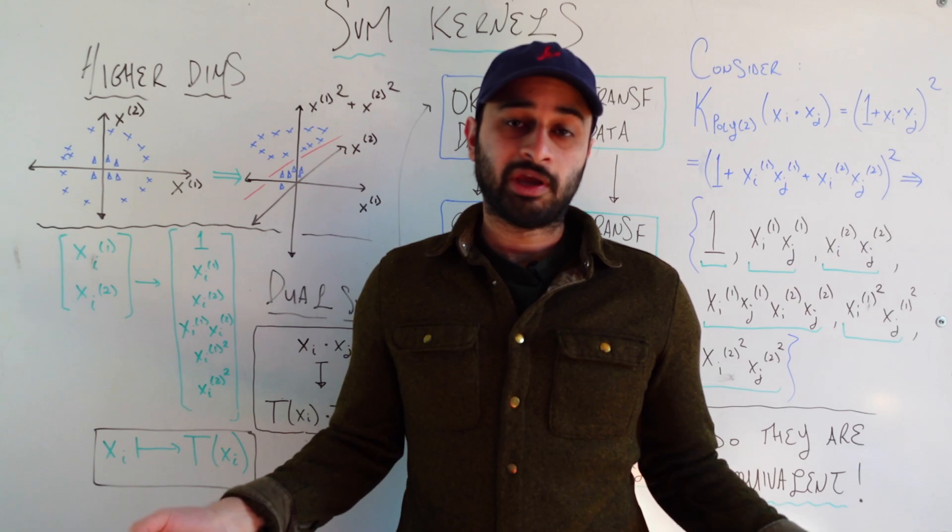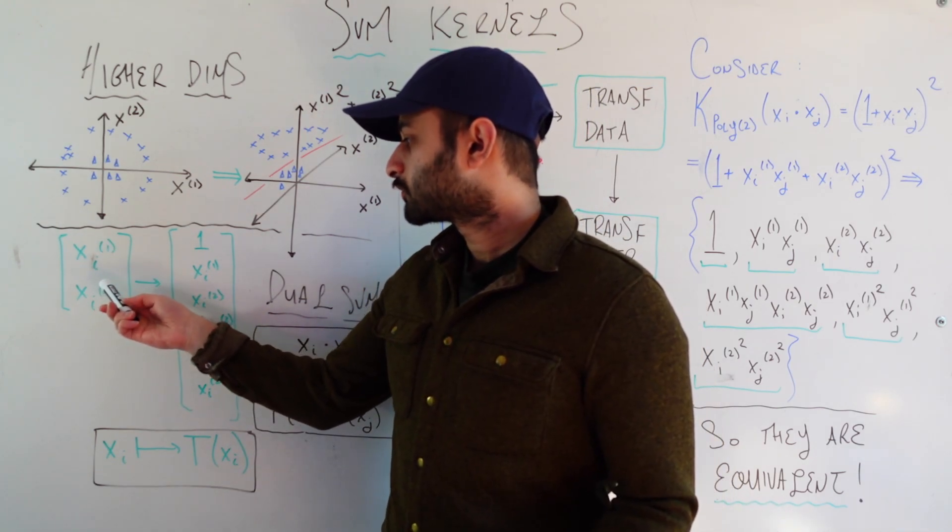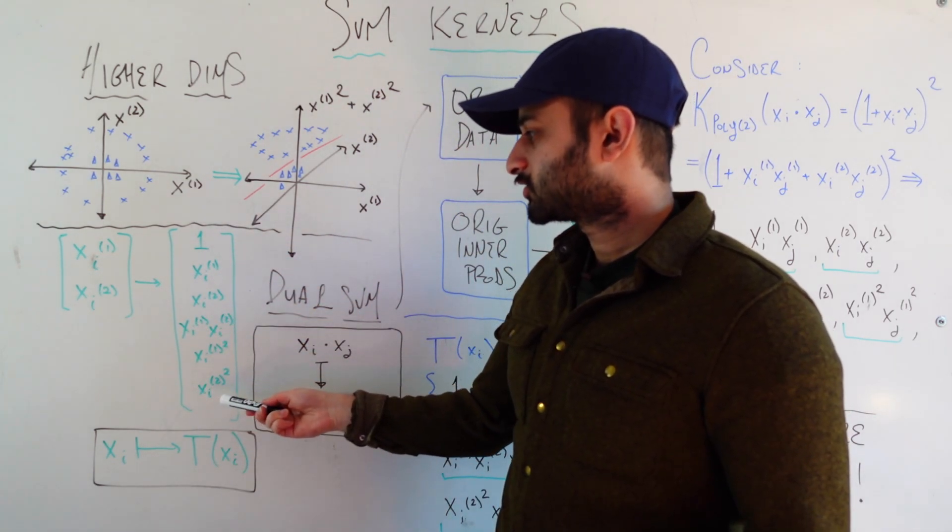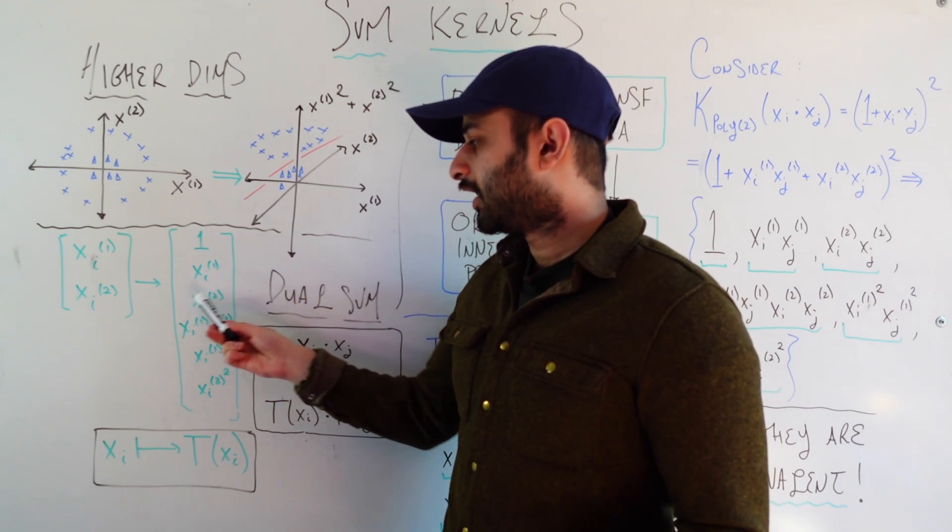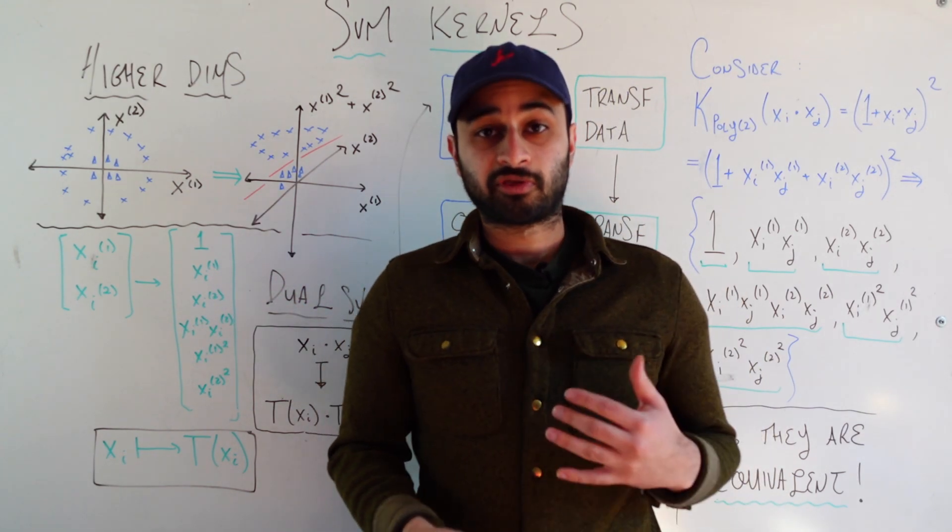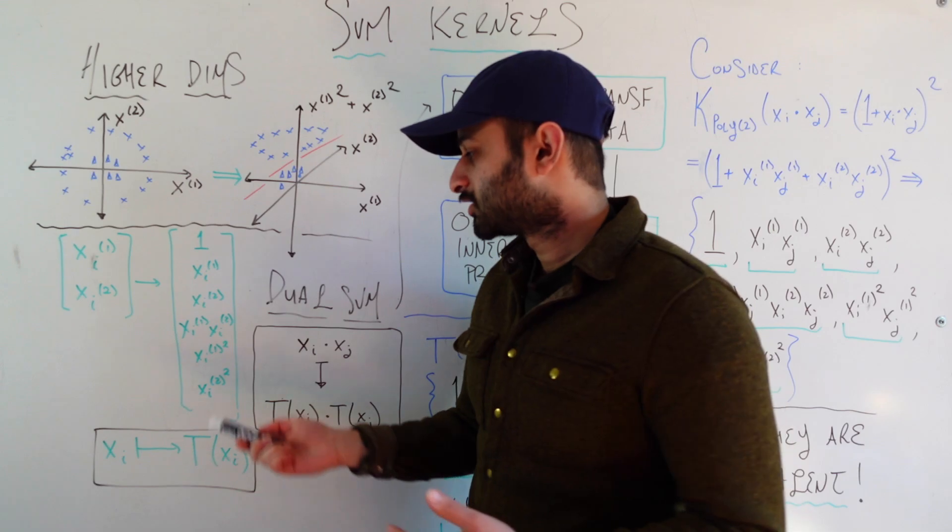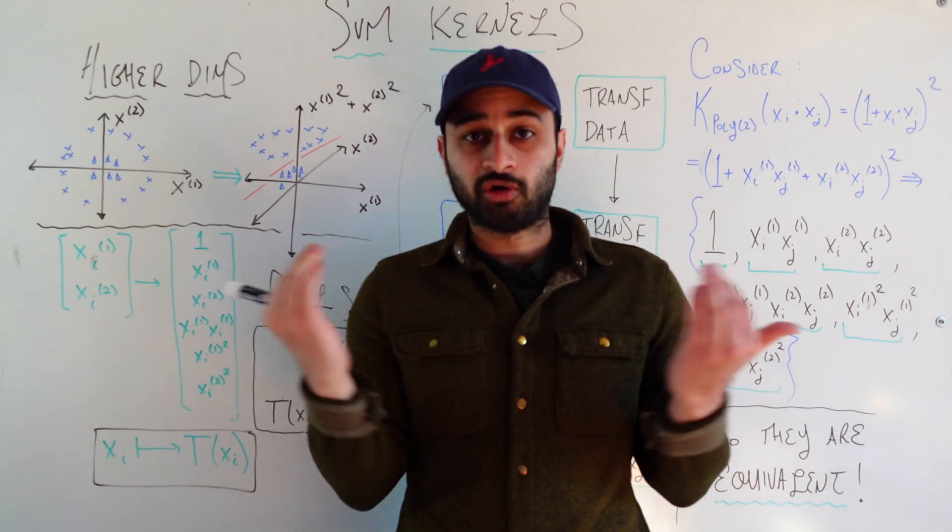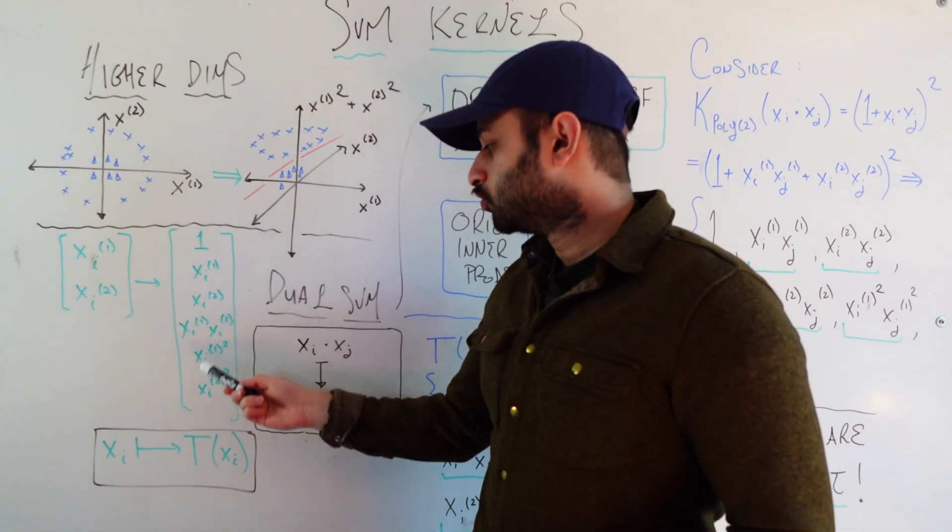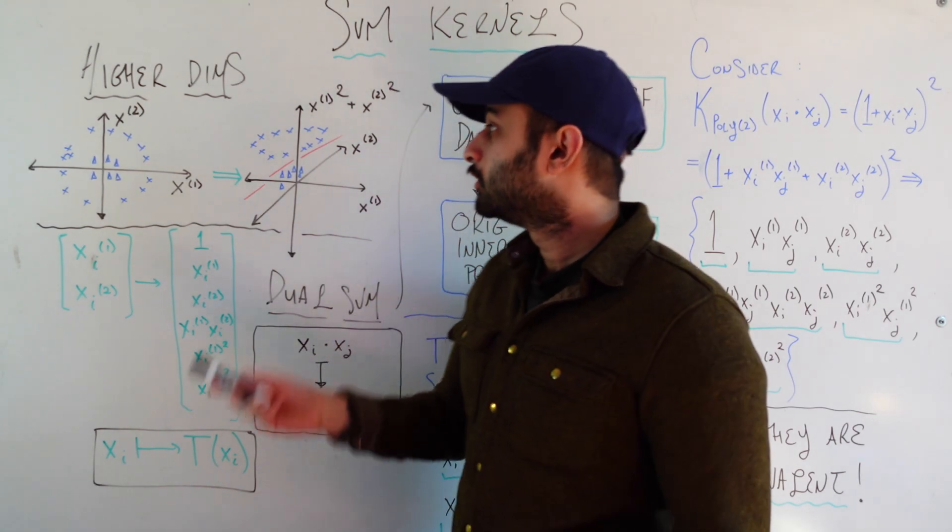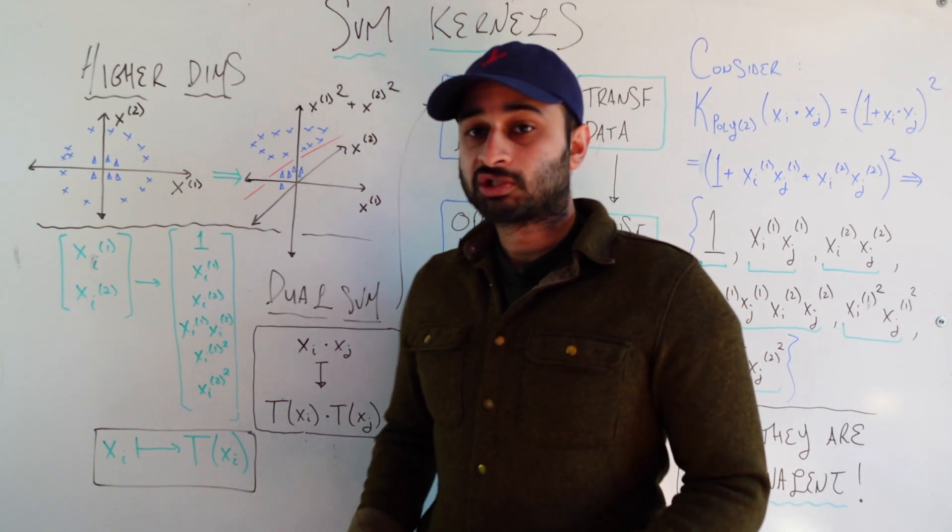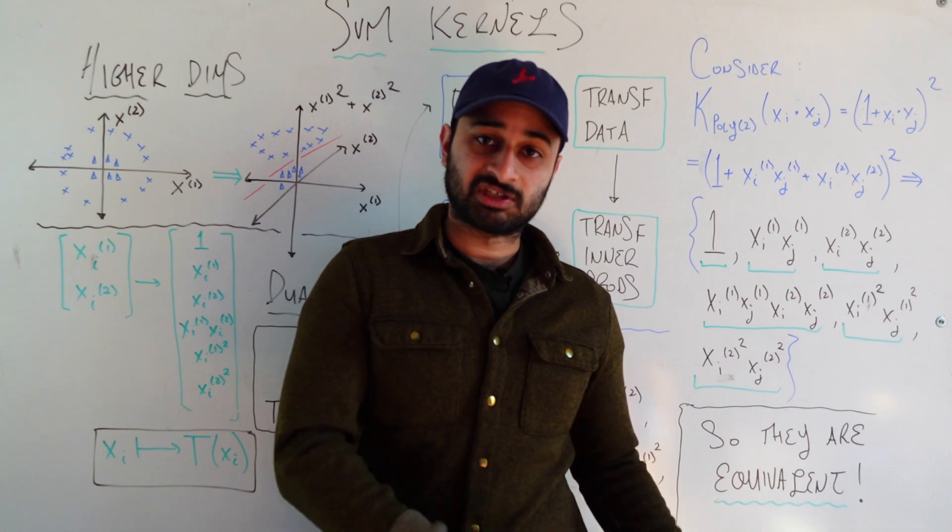Now if we wanted to consider all two-way interactions between these variables, we would have had a vector of length six. So we have a constant one, our original data xi1 and xi2, and then we consider the three different two-way interactions - the pure interaction term xi1 xi2, and then the two pure quadratic terms. Those are the two pure quadratic terms we used to construct this third feature. So we went from a two dimensional space to a six dimensional space.